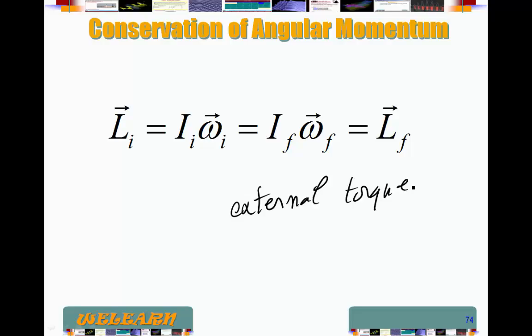So this can translate into rotational inertia initial times angular velocity initial is equal to rotational inertia final times angular velocity final. Very much like what we talked about when we talked about linear momentum.